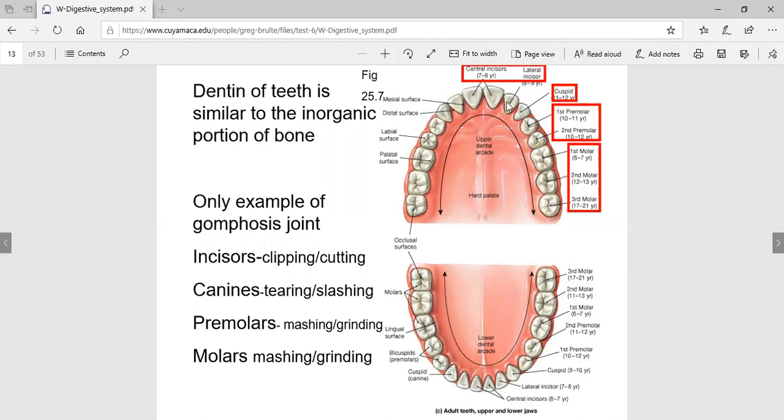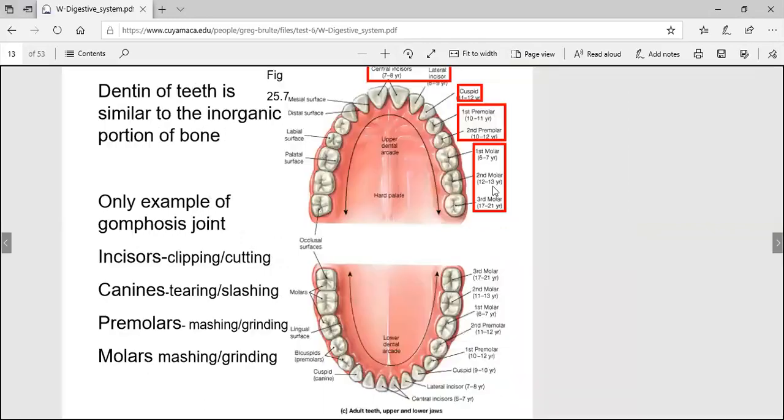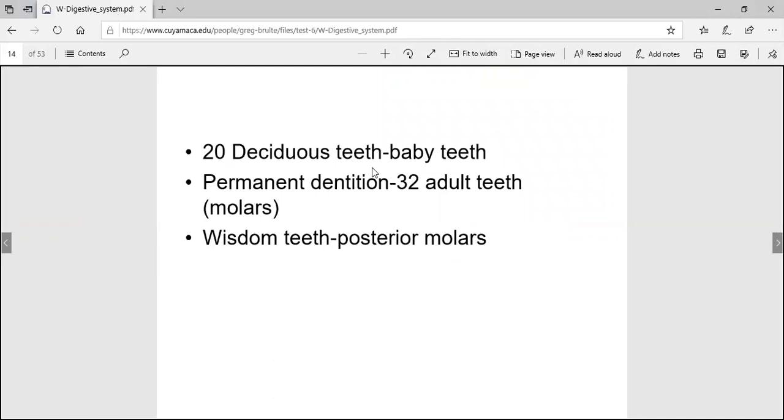The incisors are for incising through something like meat or an apple. Premolars are kind of a combination, a mix between incisors and molars. Molars are more for grinding, like for grains and bread. Don't forget 20 baby teeth, 32 adult teeth. Sometimes you get more, sometimes a couple less. There can be supernumerary or extra teeth.